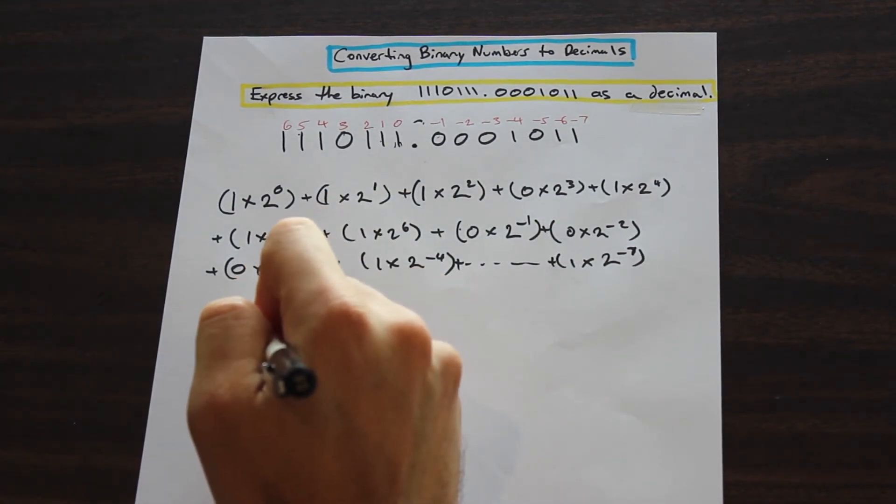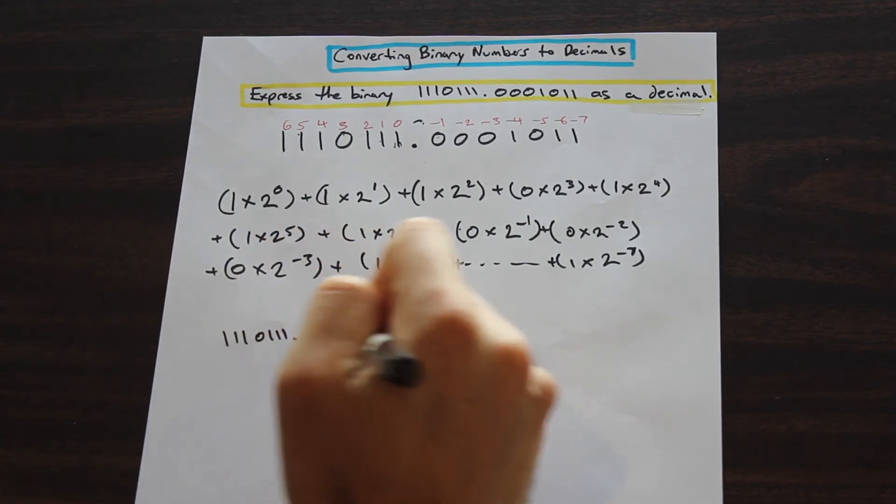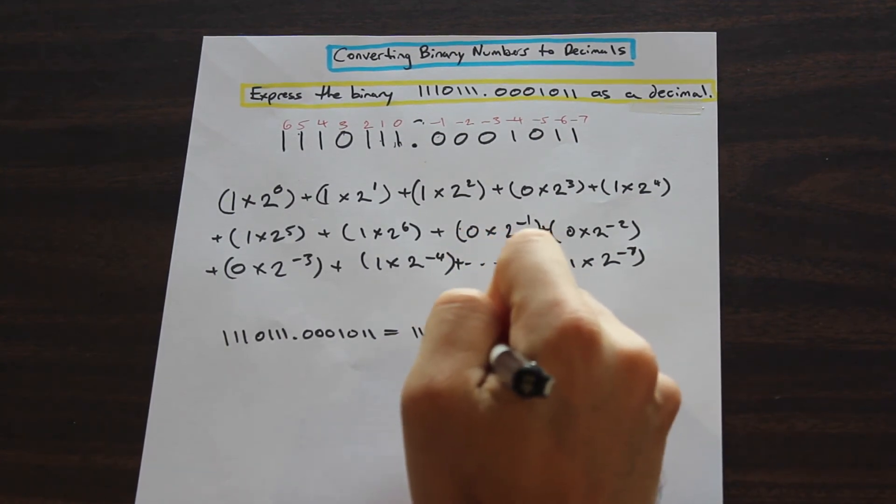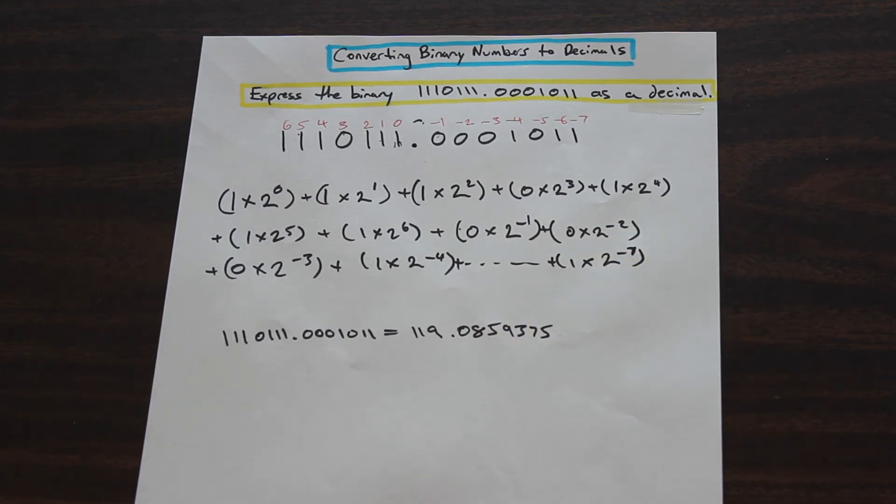And what you're going to get is that 1110111.00001011 is equal to 119.0859375.